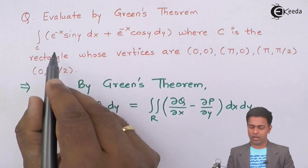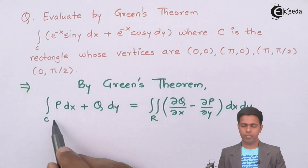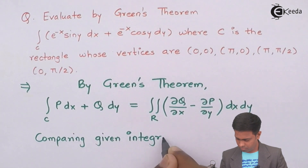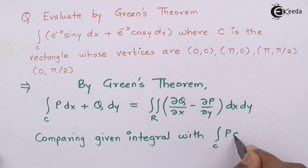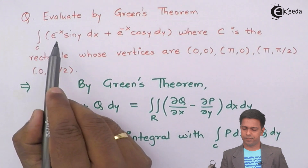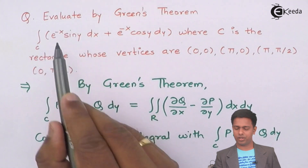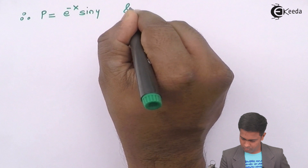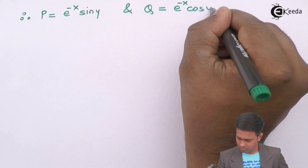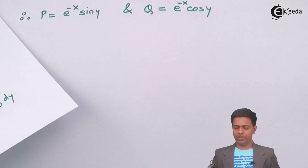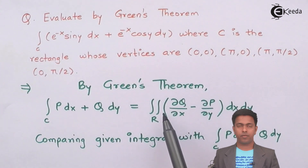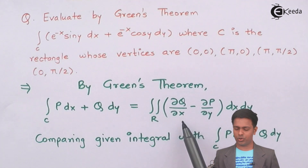Let's find out P and Q by comparing this integral with the form: integral of P dx plus Q dy. So here we have e to the power minus x sine y dx, which means this value becomes P, and the value along dy — e to the power negative x cos y — becomes Q.